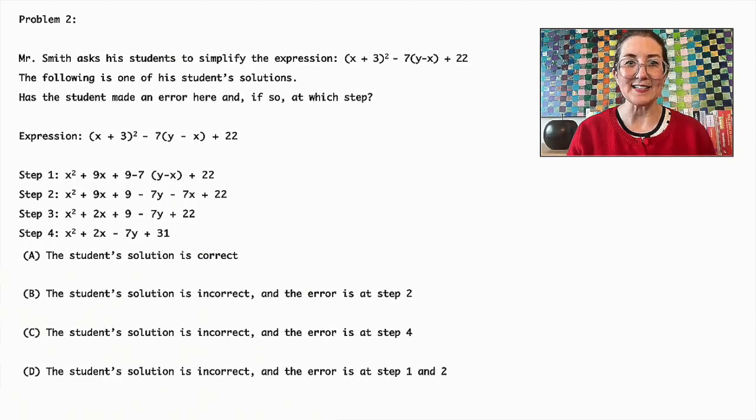Option A states that the student's solution is correct, which is not true because there are mistakes in the calculations. Option B suggests that the error is at step 2.